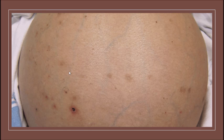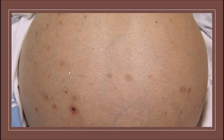It's also important that pro-drug ACE inhibitors are not used in liver failure, because most ACE inhibitors are pro-drugs requiring activation in the liver. Exceptions include captopril and lisinopril — which you can remember as 'CALI' or 'California'. The rest require hepatic activation, so they are better avoided in patients with liver failure.